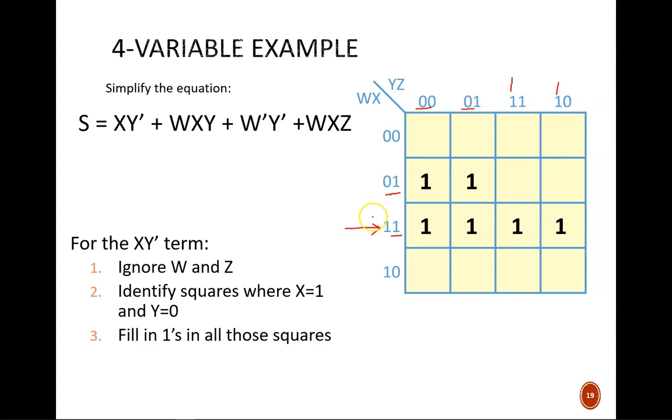We repeat the process for the remaining two product terms. W'Y' would cover all four squares in the top left corner. There is some overlap with previous ones. And WXZ would cover these two middle ones. Those are already filled in. So that's a big clue that this WXZ does not contribute any new information and will probably disappear in the simplified equation.